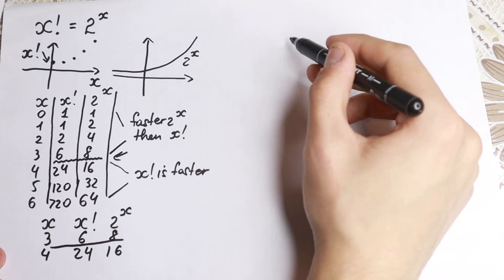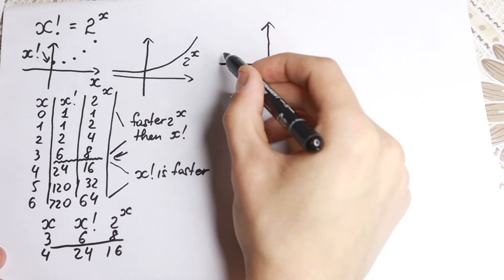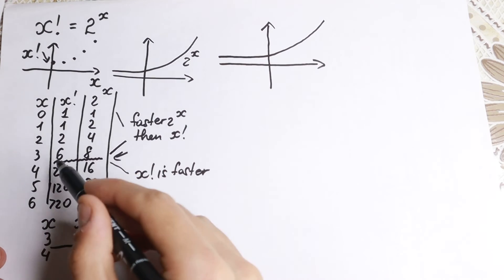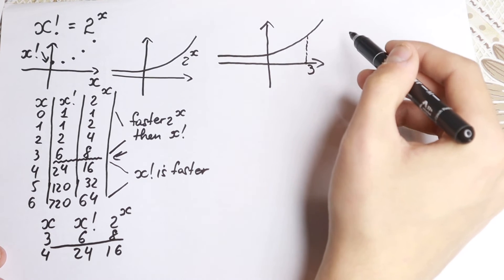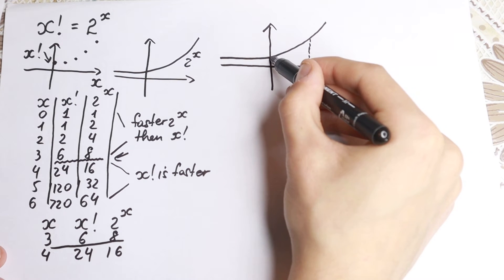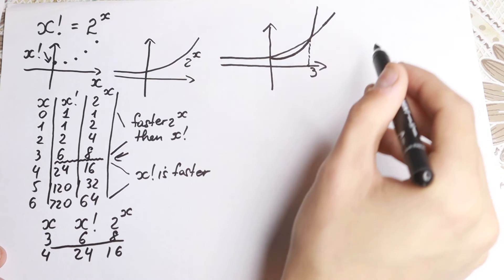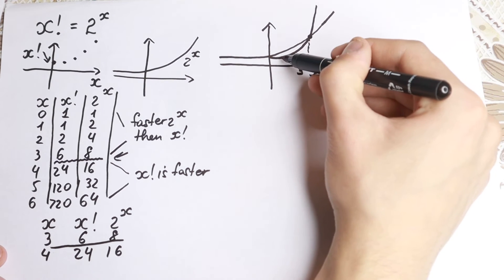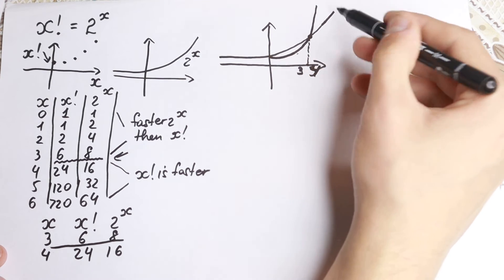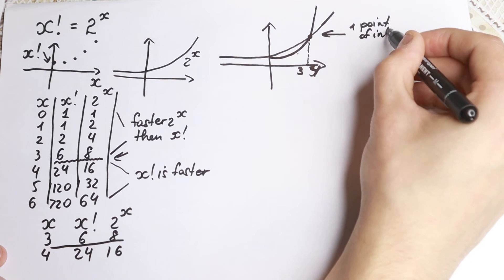Now I'm going to find this point of intersection using the graph. Let's combine these two graphs. We have the exponential function: until x equals 3, the function 2 to the x grows faster. But after 3, our factorial function grows much faster. So between 3 and 4, we will have this point of intersection.